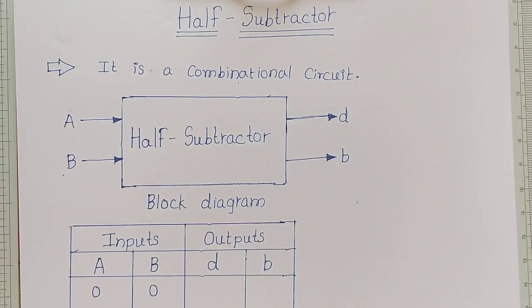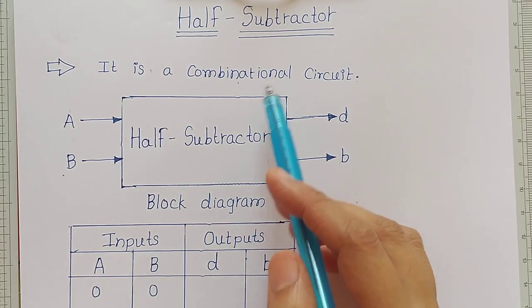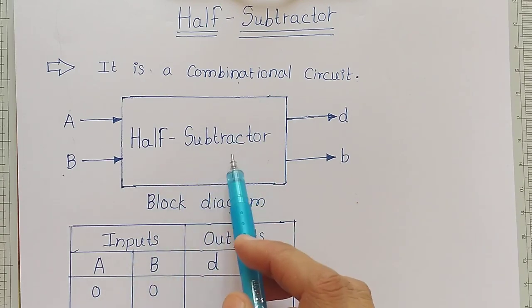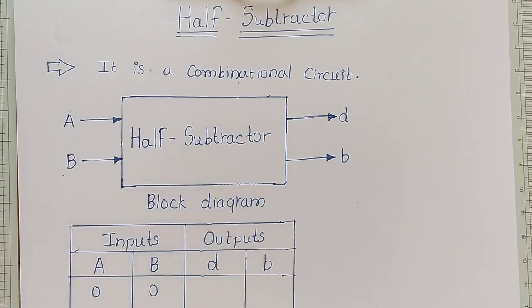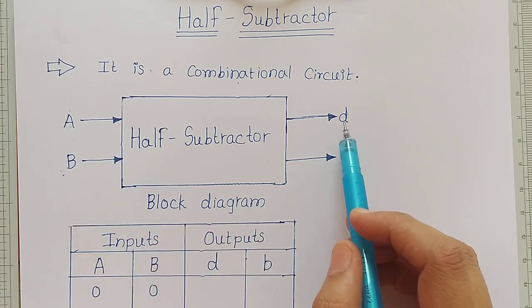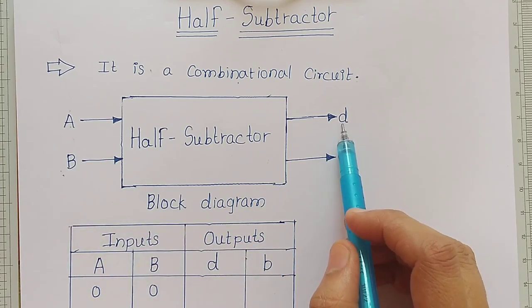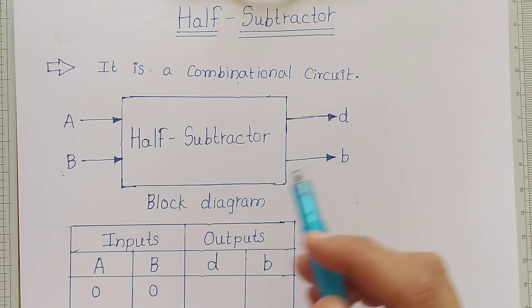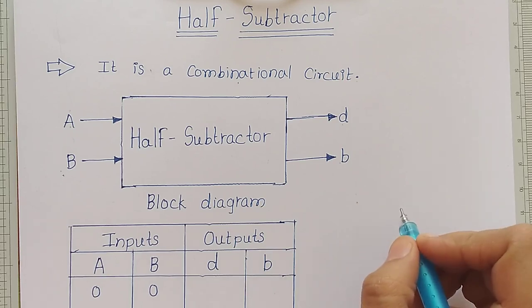Let us discuss today the half subtractor. A half subtractor is a combinational circuit. We can see here the block diagram of half subtractor, which has two inputs A and B, and two outputs: one is a difference called the D bit and another is a borrow called the B bit.